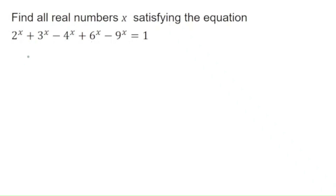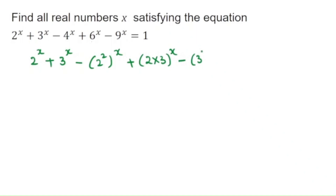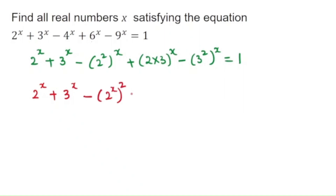Let's rewrite the equation as 2^x + 3^x - (2^x)^2 + 2·(2^x)·(3^x) - (3^x)^2 = 1. We can write it as 2^x + 3^x minus (2^x)^2 + (2^x)(3^x) - (3^x)^2 equals 1.